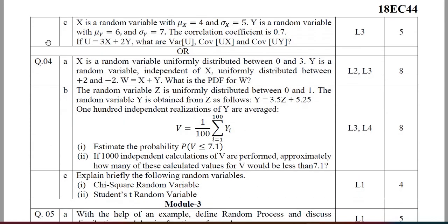For the optional question, X is a random variable uniformly distributed between 0 and 3, and Y is a random variable independent of X uniformly distributed between −2 and 2. W = X + Y. Find the probability density function for W — that carries 8 marks. Another problem: the random variable Z is uniformly distributed between 0 and 1, and Y is obtained from Z. Find the probability of V ≤ 7.1. If 1000 independent calculations of V are performed, approximately how many calculated values for V would be less than 7.1?